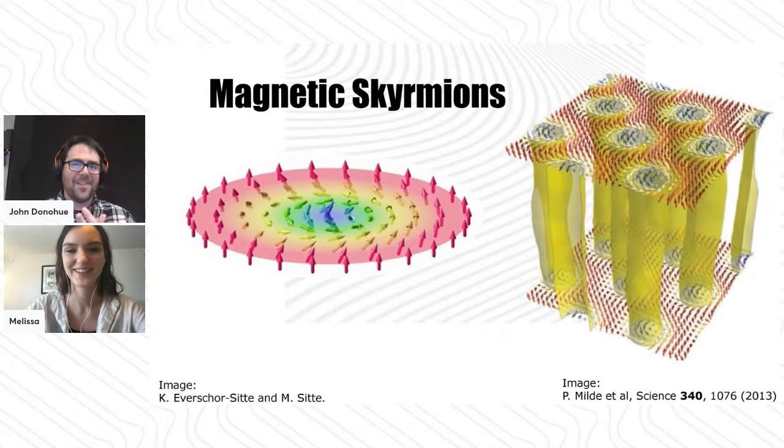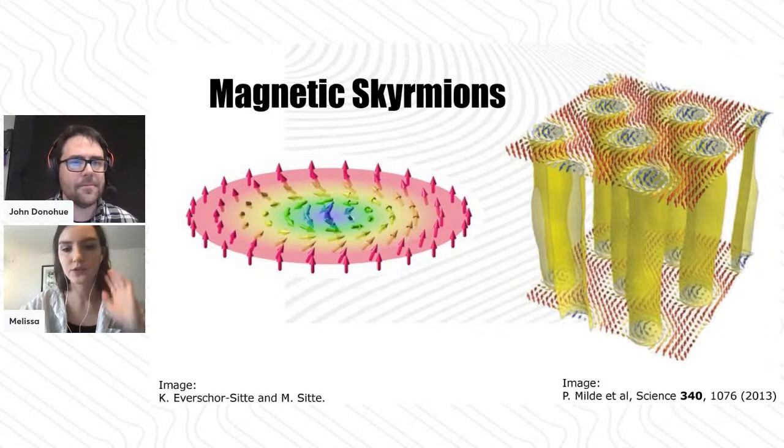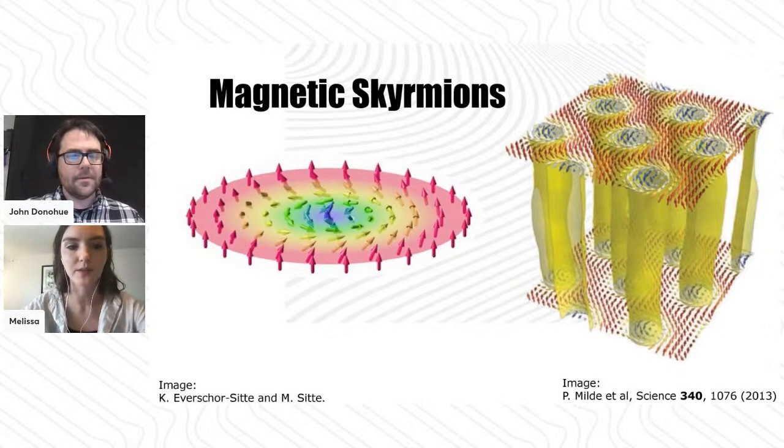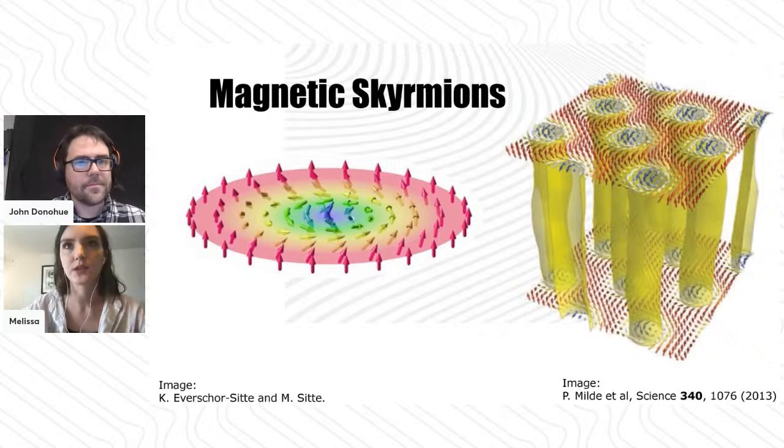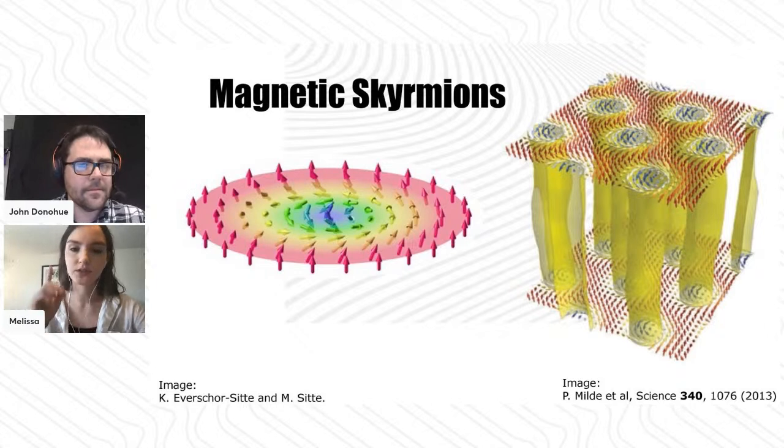As you mentioned, we aren't really looking at sub-microscopic cows, but something that looks maybe a bit more like this - these skyrmions. Instead, we're looking at the configuration of these spins. You mentioned briefly the winding number. Can you explain a bit more about that? What exactly is a skyrmion?